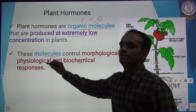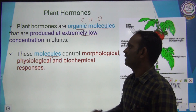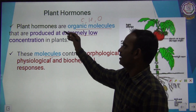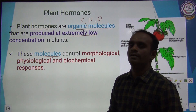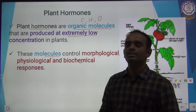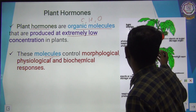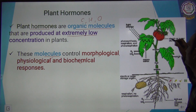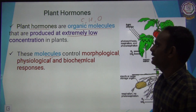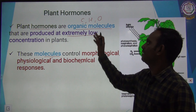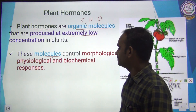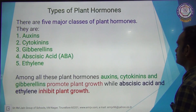All these morphological, physiological, and biochemical responses are controlled by the hormones. The plant hormones are organic molecules — that means the hormones are made up of carbon, hydrogen, and oxygen. The plant produces fruit; all this fruit production and growth of plants are controlled by the plant hormones.